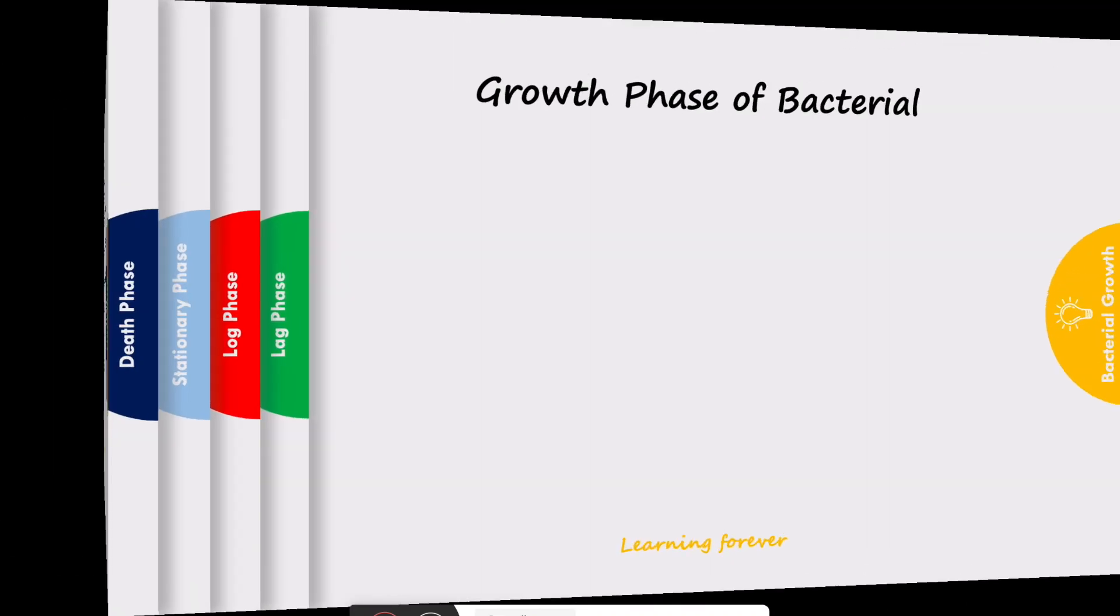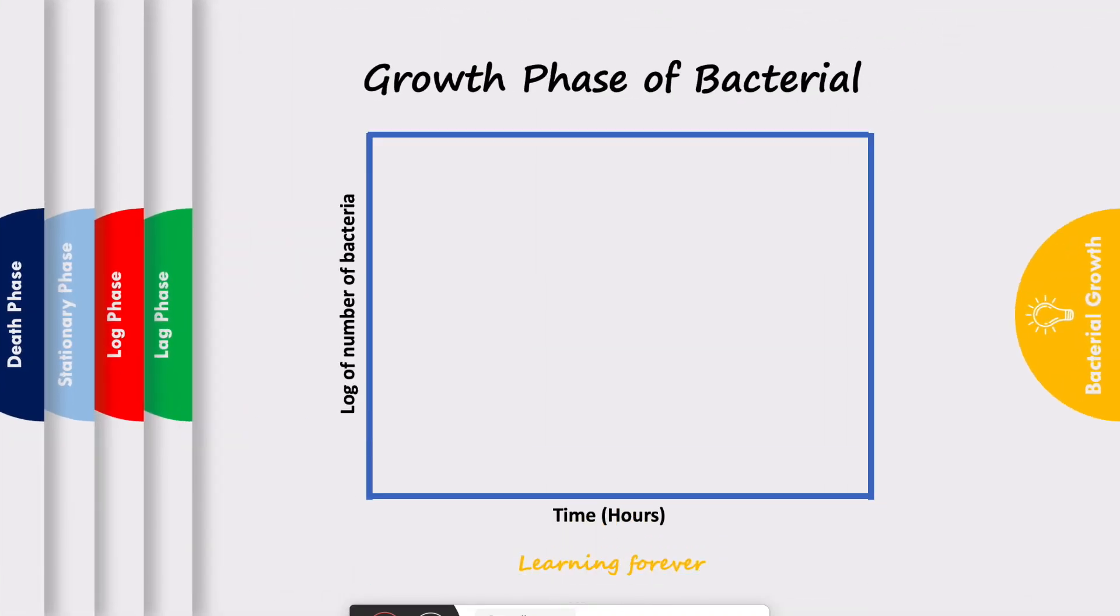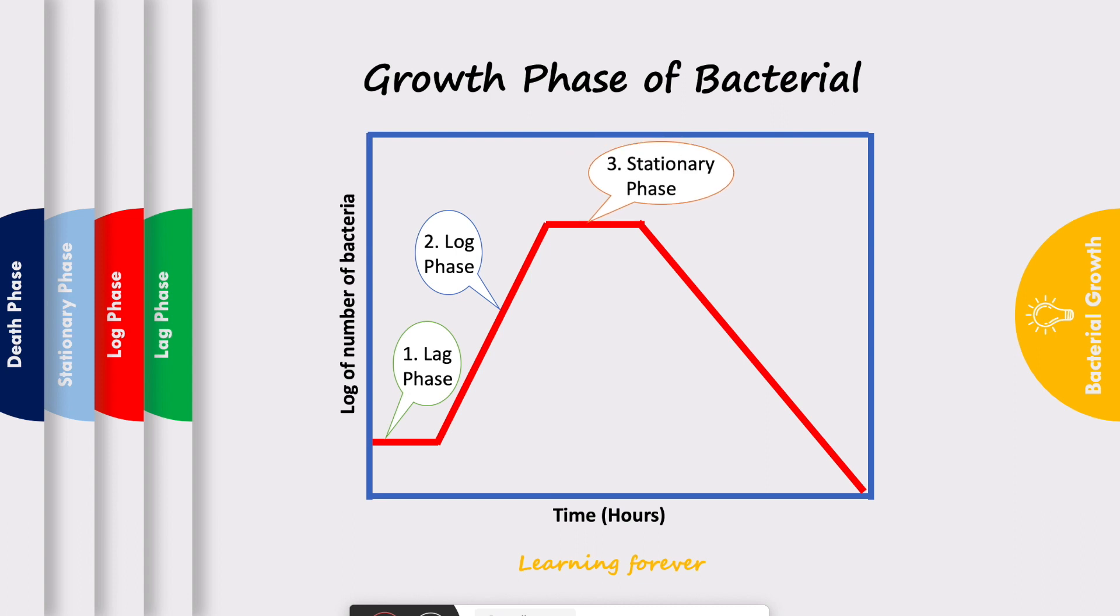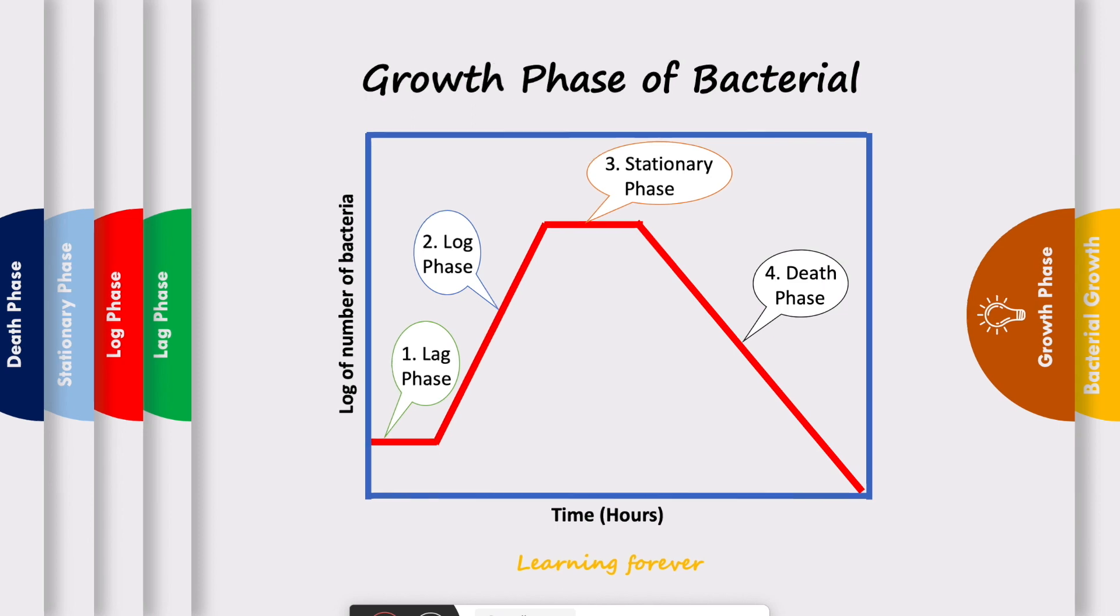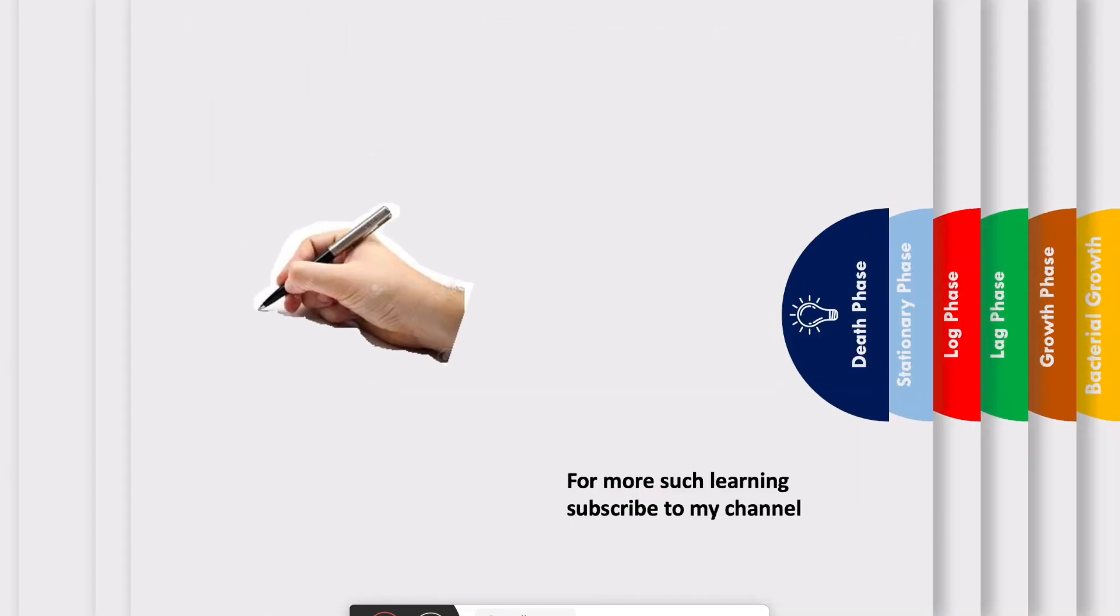To summarize, growth phase of bacteria is a plot of log of number of bacteria against time. It consists of four phases: lag phase where initial bacterial population remains the same, log phase where bacterial population increases exponentially, third phase is the stationary phase where number of cell divisions equals cell death, and fourth phase is the death phase where number of bacteria decreases continuously. I hope you have learned growth phases of bacteria.